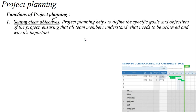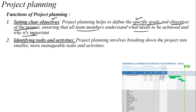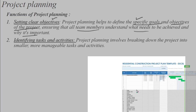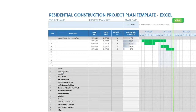Objectives help to define specific goals — how we can execute. The objectives are: ensuring that all team members understand what needs to be achieved and why it is important, how we can achieve it. Project planning also involves identifying tasks and activities — what is the task, how we can achieve construction, some activities: design, contracts, permits, inspections, site preparation. These are all activities.